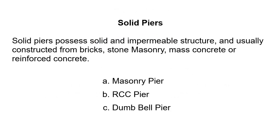Solid piers possess a solid and impermeable structure and are usually constructed from bricks, stone masonry, mass concrete, or reinforced concrete. A solid pier is the first type of pier structure.